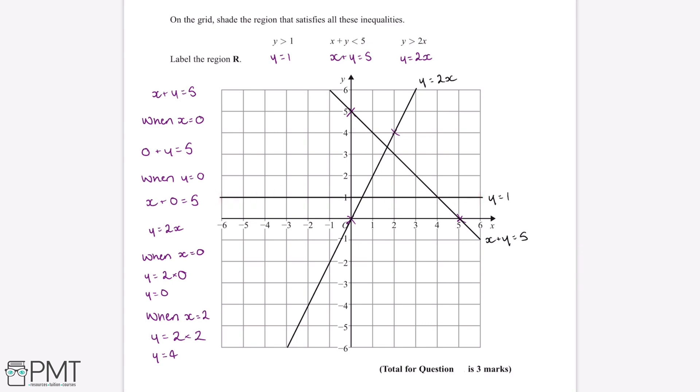The second inequality x plus y is less than 5. Well if we choose the point 1, 3, then x plus y will be equal to 4. And therefore x plus y will be less than 5. So the region in which x plus y is less than 5 will be this region below here.